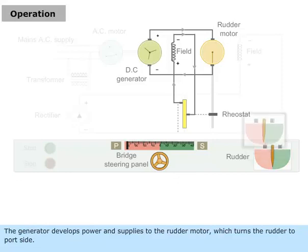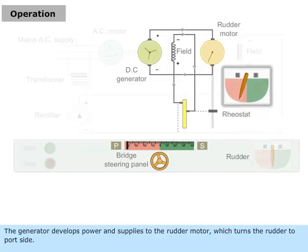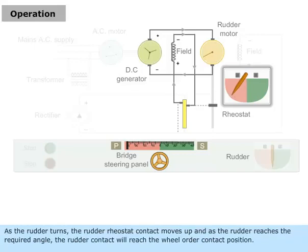The generator develops power and supplies to the rudder motor, which turns the rudder to port side. As the rudder turns, the rudder rheostat contact moves up, and as the rudder reaches the required angle, the rudder contact will reach the wheel order contact position.